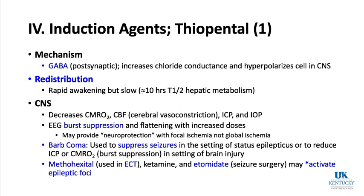Thiopental decreases cerebral oxygen use (CMRO2) and cerebral blood flow via cerebral vasoconstriction, reducing intracranial pressure and intraocular pressure. The EEG shows dose-dependent slowing — enough thiopental causes total EEG flattening or burst suppression. Barbiturates have been used for neuroprotection in focal ischemia and stroke (not global ischemia), and can suppress seizures in status epilepticus or reduce ICP in brain injury. Methohexital, along with ketamine and etomidate, can activate epileptic foci — useful in seizure mapping surgery.